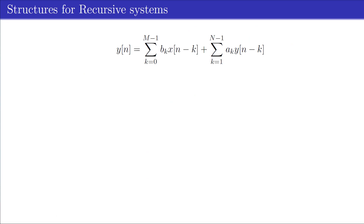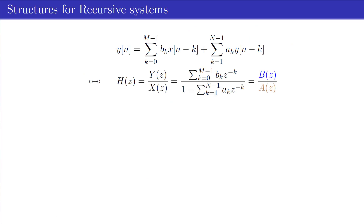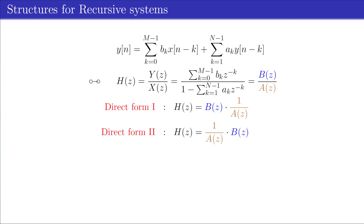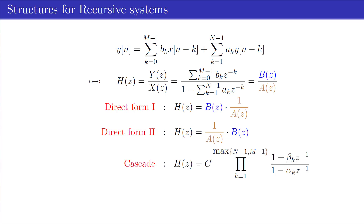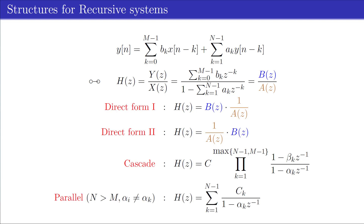The difference equation of a recursive system is described, and its rational system function H contains a numerator polynomial B and a denominator polynomial A. From this, we can derive the following recursive structures: multiplying B with 1 divided by A gives the direct form 1; multiplying 1 divided by A with B gives the direct form 2 structure; the cascade structure is derived by factoring both B and A; and finally, the parallel structure results from using the partial fraction expansion.